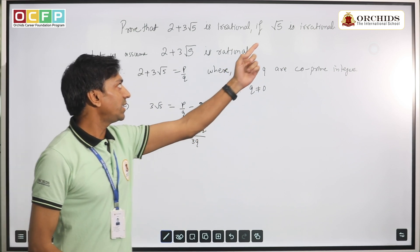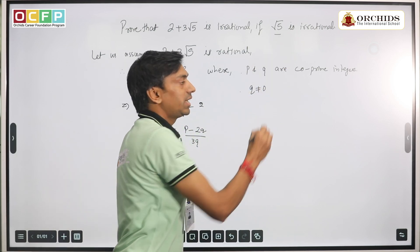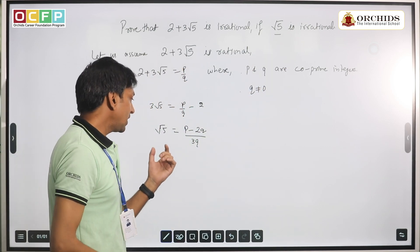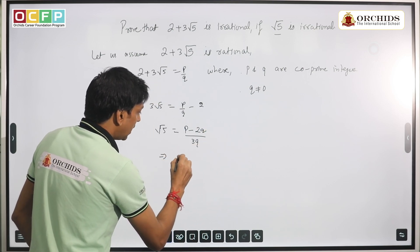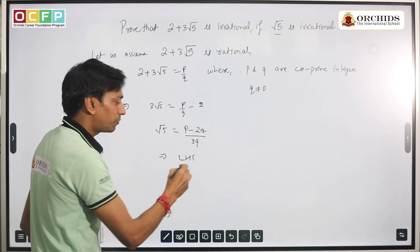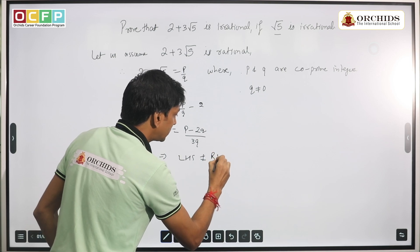But if you see on the left-hand side, it's already given in the question that √5 is irrational. Therefore, we can say that an irrational number cannot be equal to a rational number. This implies the left-hand side, which is √5, cannot be equal to the right-hand side.